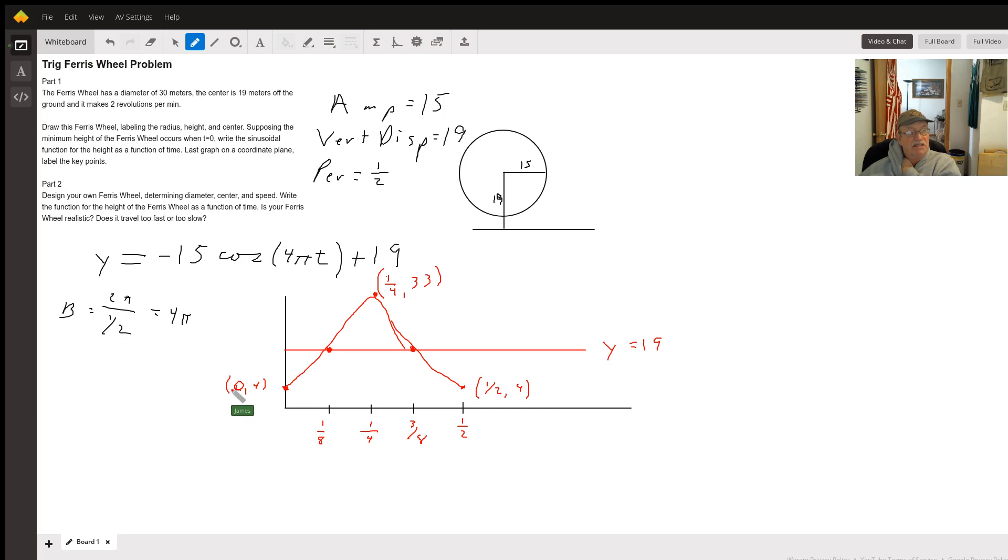So let's see what's next. Design your own, diameter to the speed, write a function for the height as a function of time. Is your ferris wheel realistic? Does it travel too fast or too slow? Well, this one, two revolutions a minute seems to be pretty fast. You're going all the way around in 30 seconds. Okay, so let's change some stuff up here.